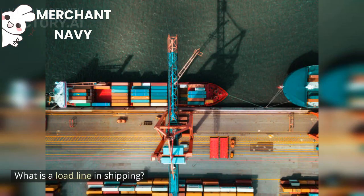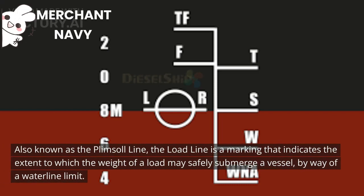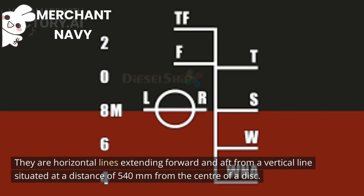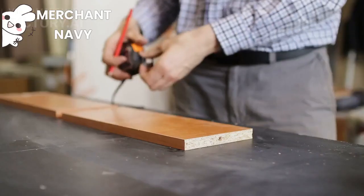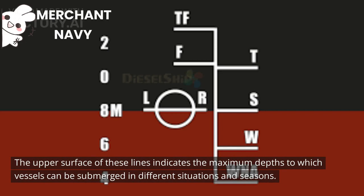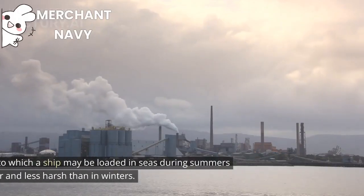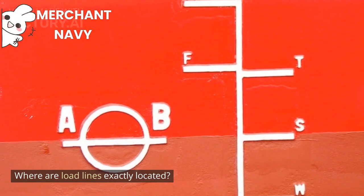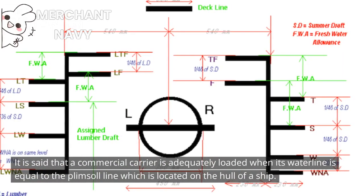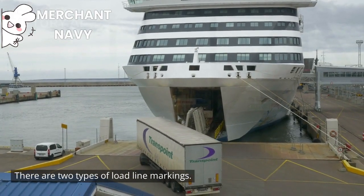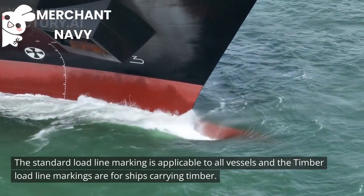Frequently asked questions. What is a load line in shipping? Also known as the Plimsoll line, the load line is a marking indicating the extent to which the weight of a load may safely submerge a vessel by way of a waterline limit. Load lines are horizontal lines extending forward and aft from a vertical line situated at 540 mm from the center of a disk, measuring 230 mm by 23 mm. The upper surface of these lines indicates the maximum depths to which vessels can be submerged in different situations and seasons. The summer load line is the waterline up to which a ship may be loaded in seas during summers when waves are lower and less harsh than in winters. A commercial carrier is adequately loaded when its waterline is equal to the Plimsoll line, located on the hull. There are two types of load line markings: the standard load line marking applicable to all vessels, and the timber load line markings for ships carrying timber.